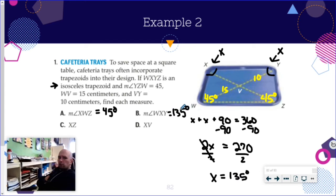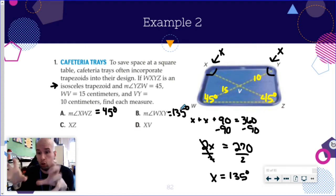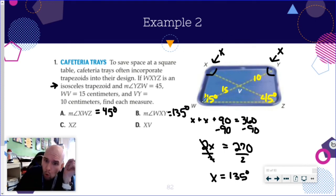Now in an isosceles trapezoid, the two diagonals are congruent if it's isosceles. Now that doesn't mean they bisect each other. There's nothing like that going on. However, whatever this side is, is going to be the same as that side.